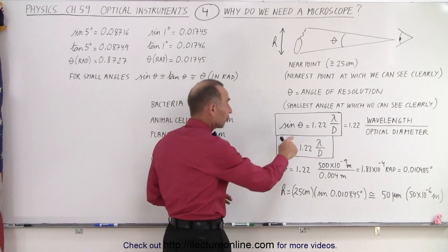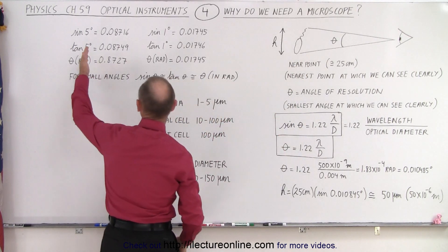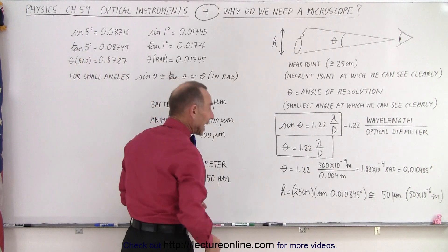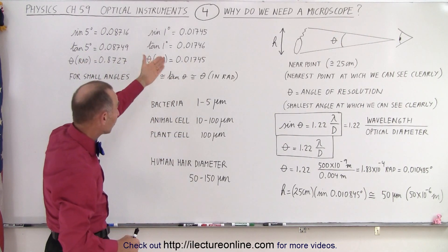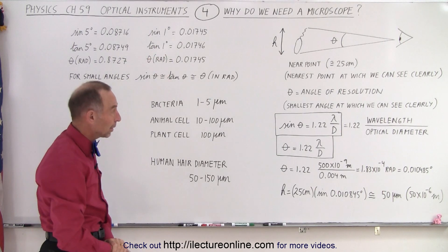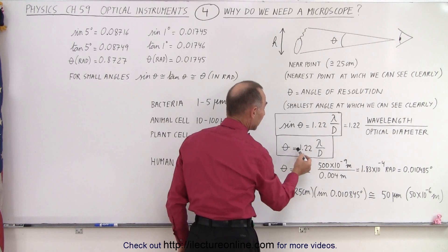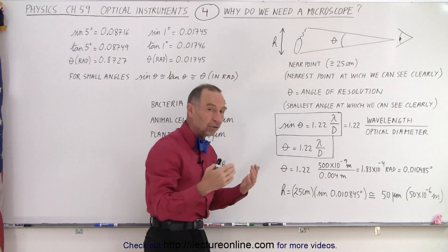Now notice that for very small angles, typically when we're dealing with this, we can see that there's really not a lot of difference between the sine of the angle, the tangent of the angle, or the angle expressed in radians. And if it gets down to one degree, you can see there's virtually no difference between them. So instead of writing the sine of theta, we can simply write theta equals 1.22 times the wavelength of the light that we use to see with.